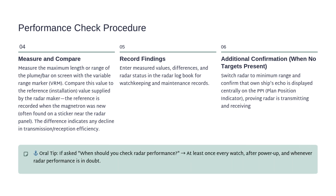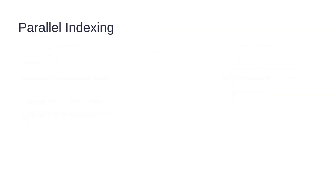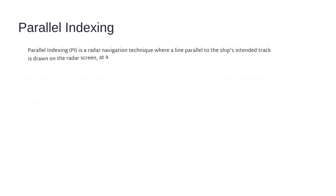Oral tip: If asked when you should check radar performance, the answer is at least once every watch, after power-up, and whenever radar performance is in doubt. Now, let's move on to parallel indexing, often called PI.